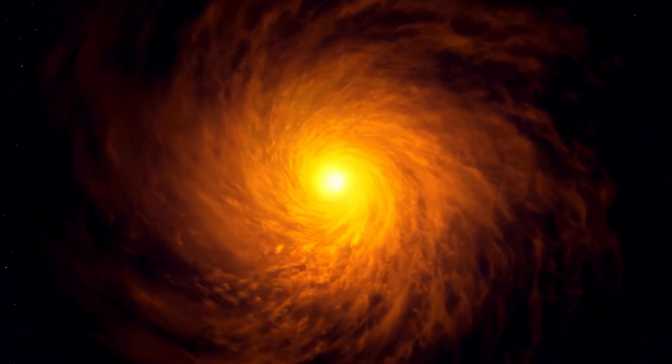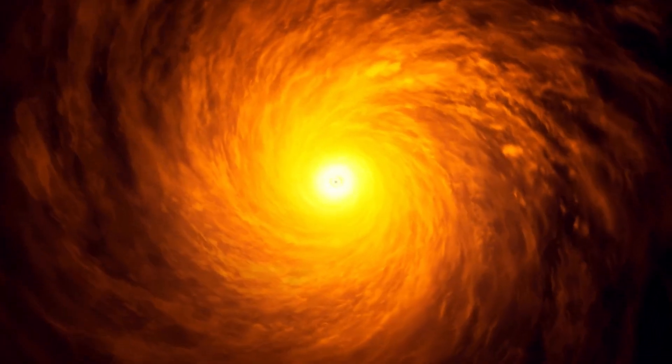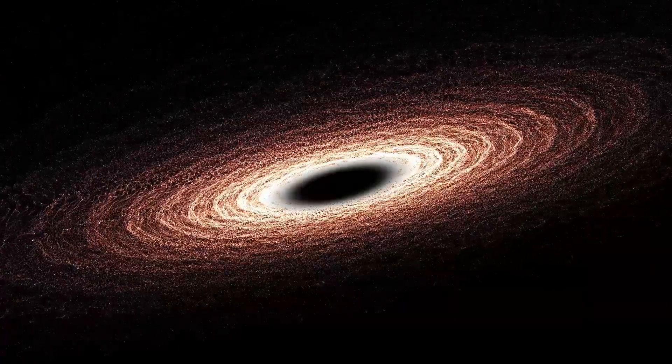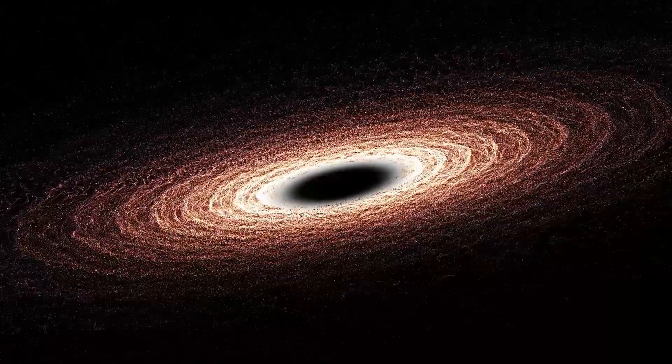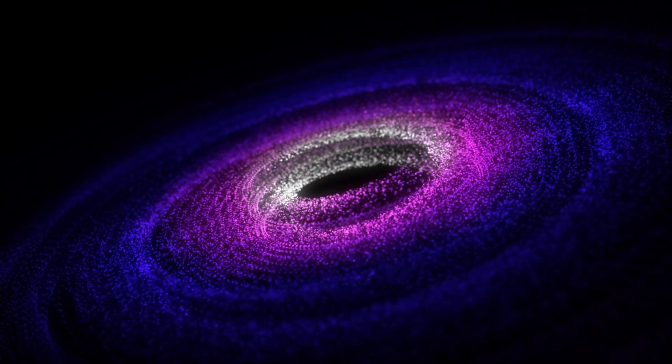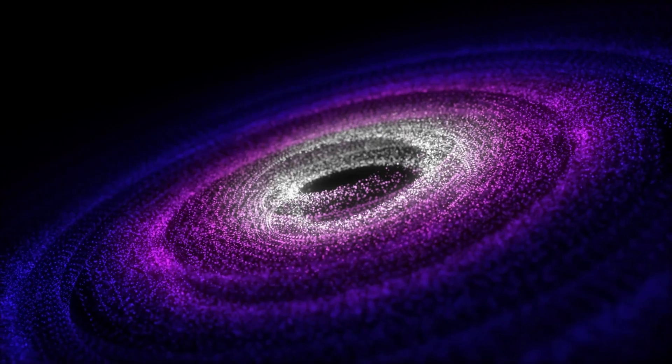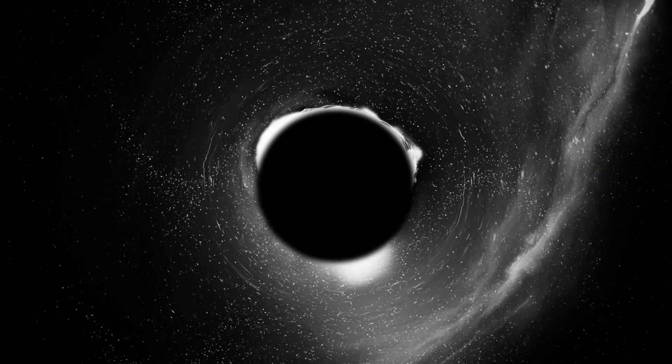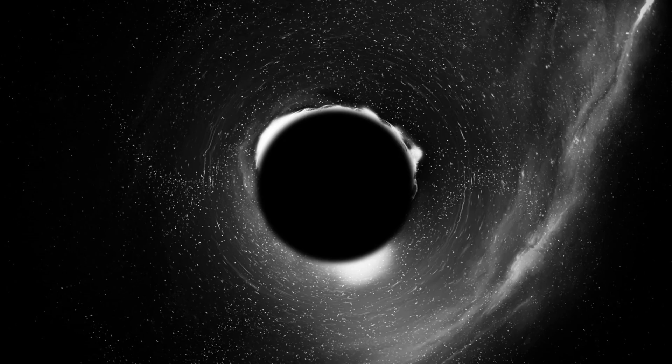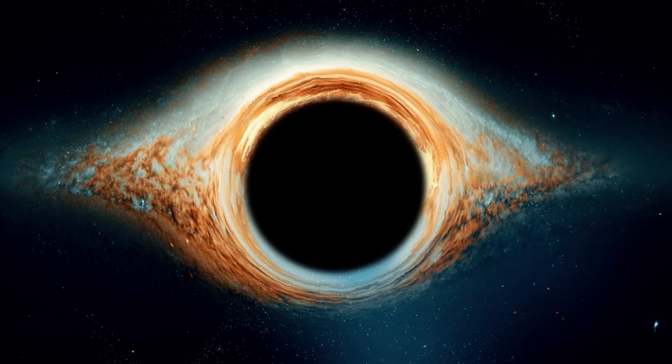Then, gravitational wave observatories like LIGO and VIRGO made additional observations. They detected ripples in spacetime caused by the collision and merger of black holes. The detection of gravitational waves in 2015 was a monumental breakthrough in astronomy, providing indirect evidence of black holes and confirming the existence of binary black hole systems where two black holes orbit each other before merging and producing powerful gravitational wave signals. Black holes have long captivated the imagination of both scientists and the public.